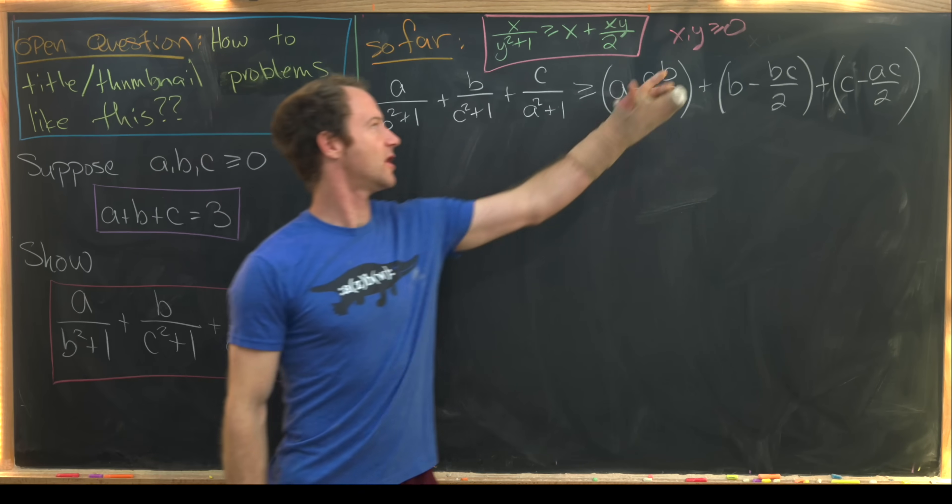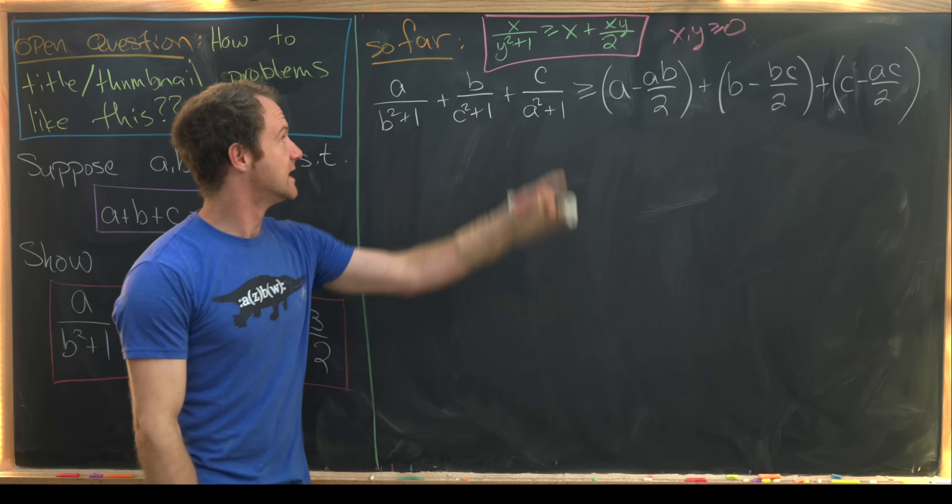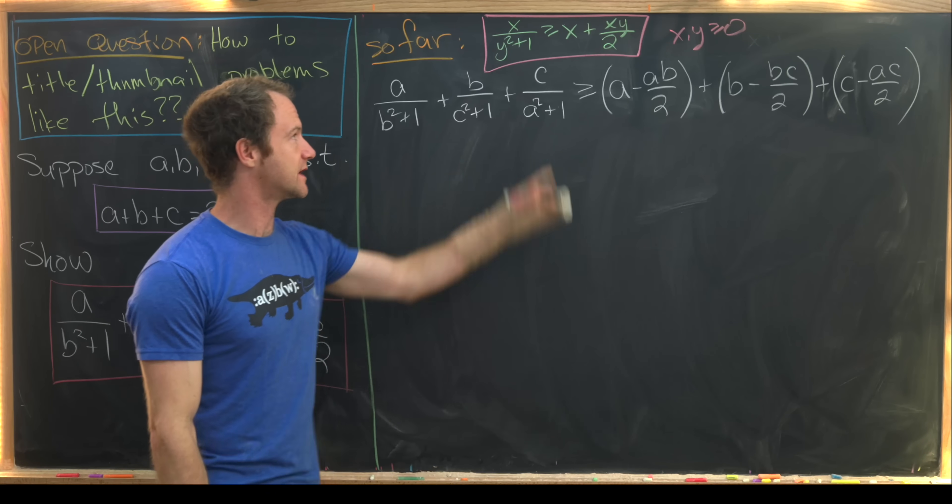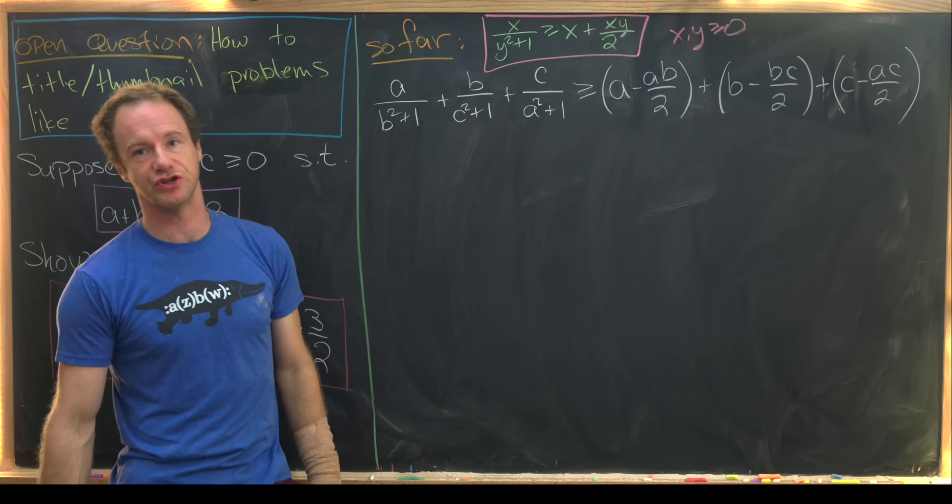So on the last board we showed that for all non-negative x and y, this x over y squared plus 1 is bigger than or equal to x minus xy over 2.